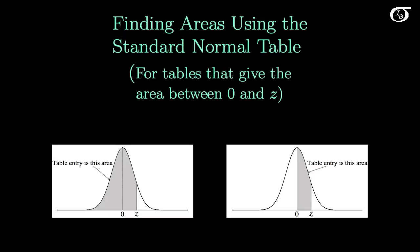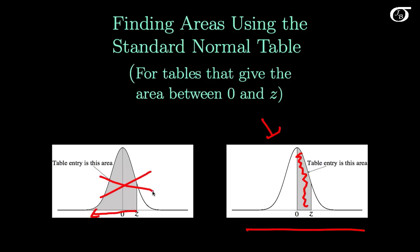Here we're going to look at finding areas using the standard normal table. In this video I'm going to look at tables that give the area between 0 and the z value we look up. Another common type of table gives the area to the left, but I look at that in another video and won't cover it here.